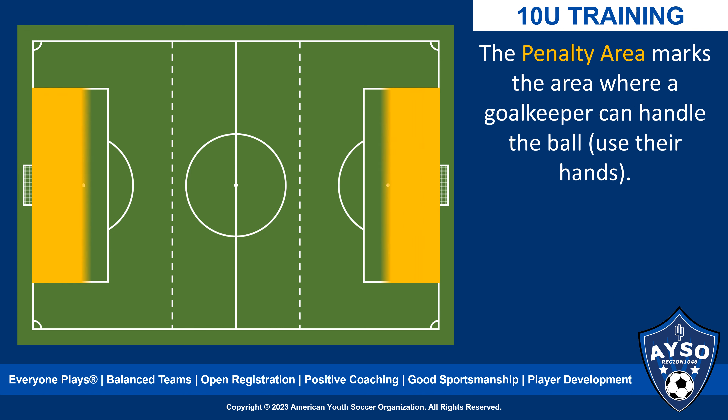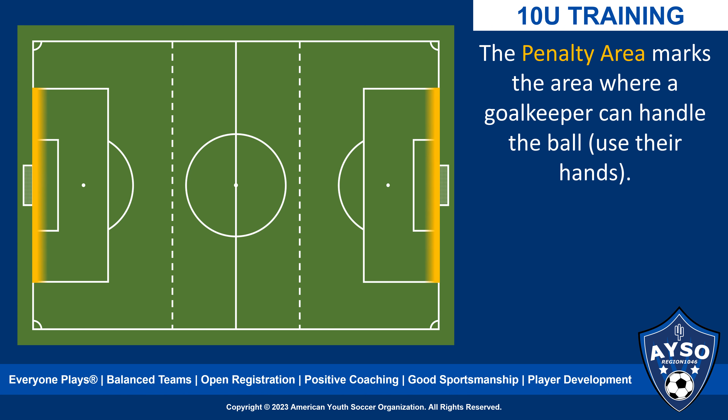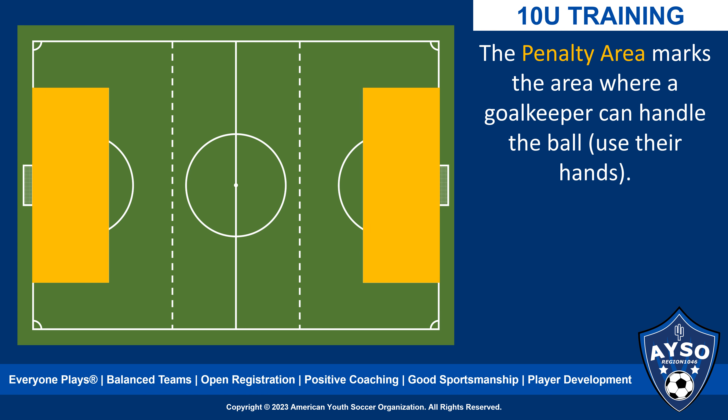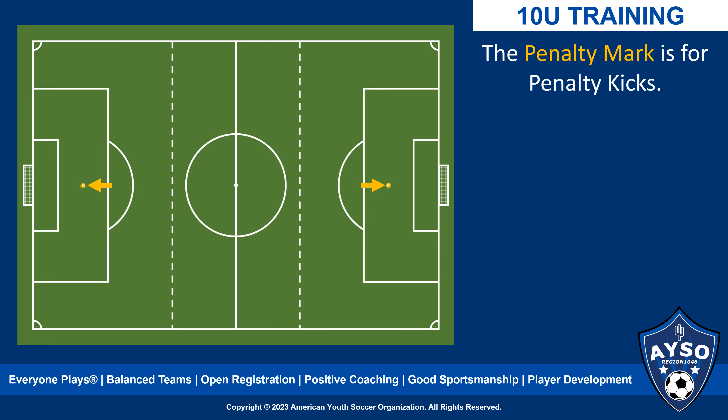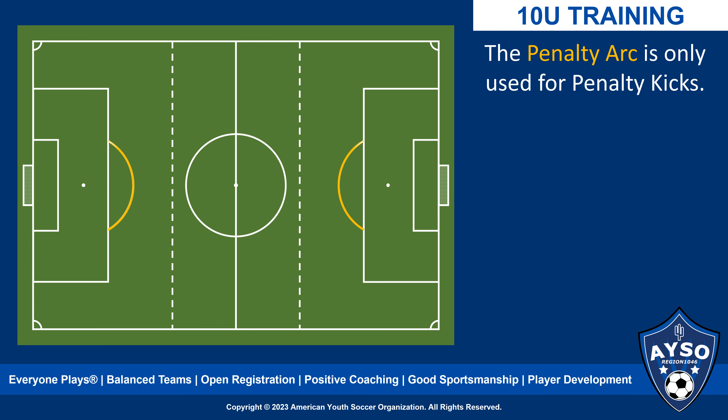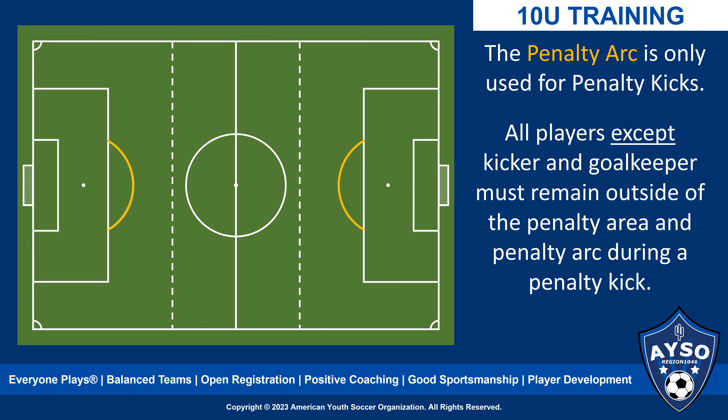The penalty area marks the area where a goalkeeper can handle the ball, commonly referred to as using their hands. The lines outlining the penalty area are part of the penalty area. The penalty mark is the spot where penalty kicks are taken. The penalty arc is only used for penalty kicks — all players from both teams, except for the kicker and goalkeeper, must remain outside of the penalty area and the penalty arc during a penalty kick.